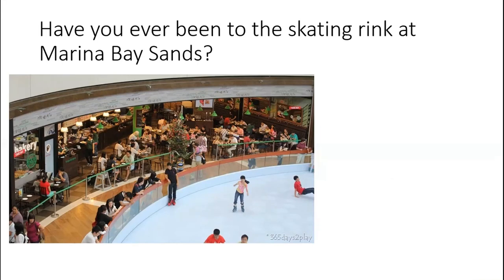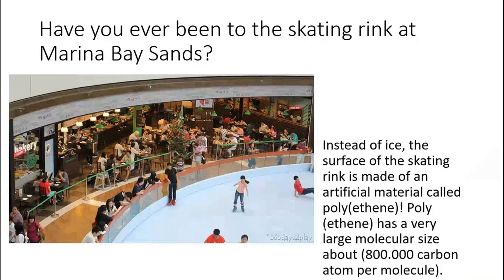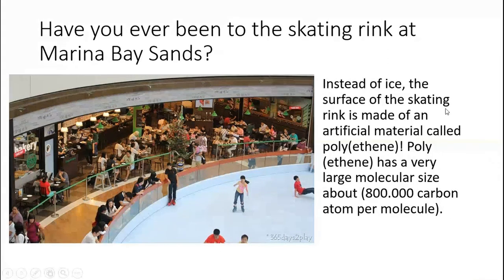Have you ever been to the skating rink at the Marina Bay Sands? Not yet — me too. Instead of ice, the surface of the skating rink is made of an artificial material called polyethene.